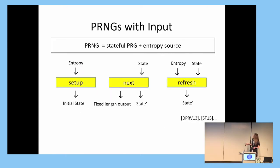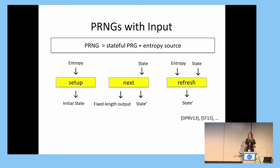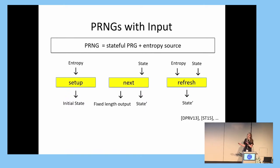So what is a PRNG? At a high level, a PRNG with input is a stateful PRG which has continual access to an imperfect source of randomness that we call the entropy source. We usually define our PRNG to be a tuple of algorithms. The initial state generation algorithm takes as input an entropy sample and uses this to construct an initial generator state. The output generation algorithm takes the current state and returns a fixed-length pseudo-random output. And the refresh algorithm incorporates entropy samples into the generator state.